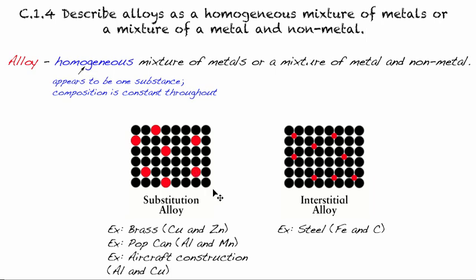And so that would be then a substitution alloy. And the reason I chose that is because copper is more abundant than zinc and brass. For pop can, it would be aluminum and manganese. For aircraft construction, aluminum and copper. So that's a substitution alloy.